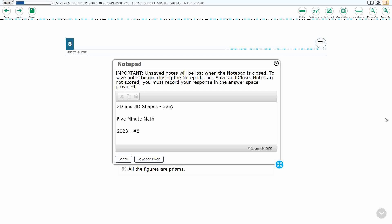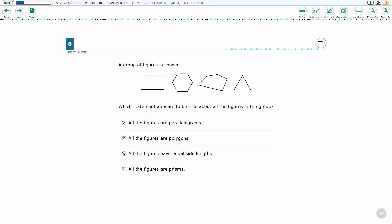Hello and welcome to 5-Minute Math. Today we are looking at the third grade concept of 2D and 3D shapes. This is standard 3.6a in the great state of Texas and we're using item number 8 of the 2023 released STAR test. If you haven't done so already, please go ahead and take a moment to pause the video, work this problem out on your own, unpause it, and we will look at our answers together.